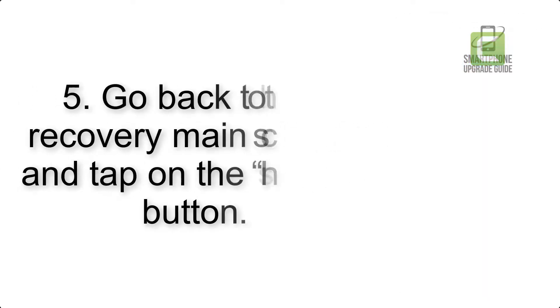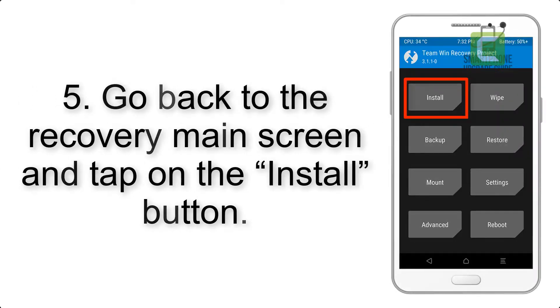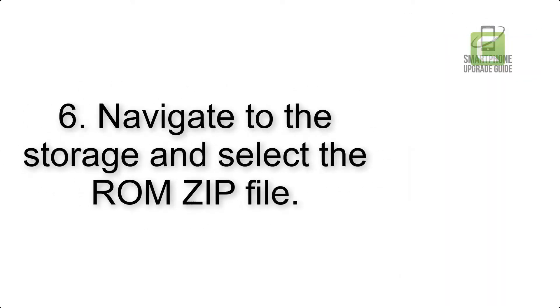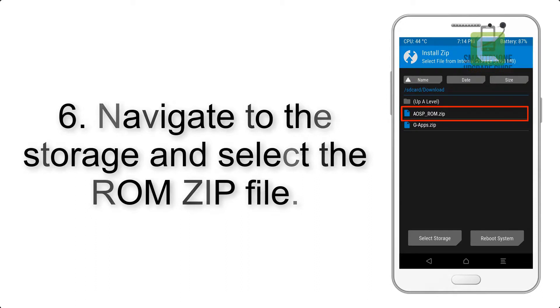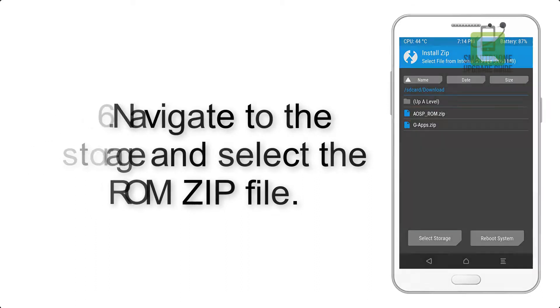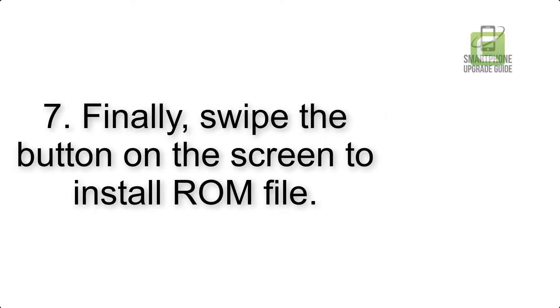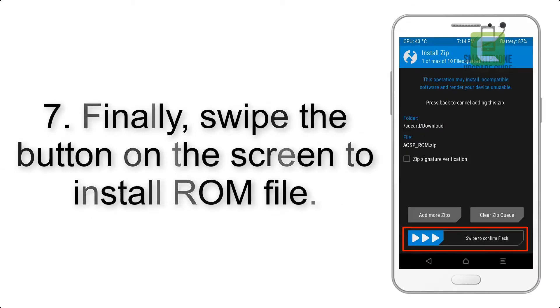Step 5: Go back to the recovery main screen and tap on the Install button. Step 6: Navigate to the storage and select the ROM zip file. Step 7: Finally, swipe the button on the screen to install the ROM file.